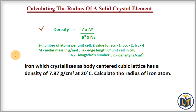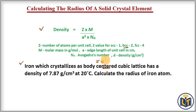The problem states that iron is an element which crystallizes as a body-centered cubic lattice. Iron has a BCC structure, and from this we can calculate the Z value. The Z value for BCC is 2, meaning there are 2 atoms per unit cell. The density D is given as 7.87 grams per centimeter cubed at 20 degrees Celsius.